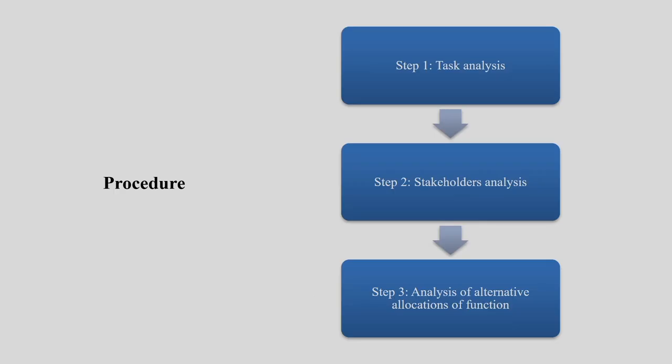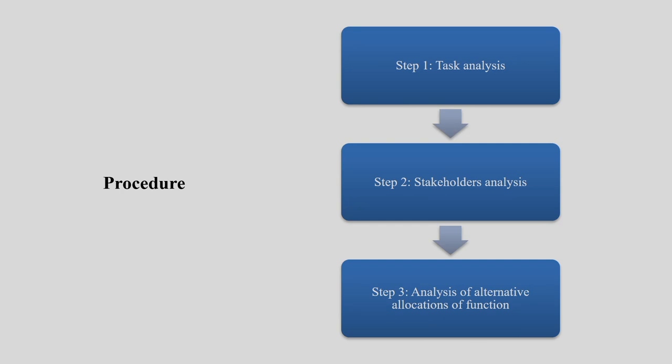Now let us look at the exact steps for how we do allocation of functions. The first step is task analysis. You can get this data from your earlier hierarchical task analysis (HTA). When we practice HTA, we create a tree where the top-most functions are at the top and we branch them out until we reach the base level — the small elements that cannot be broken further.